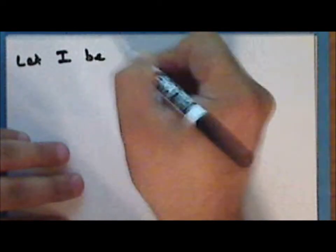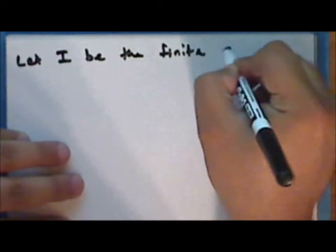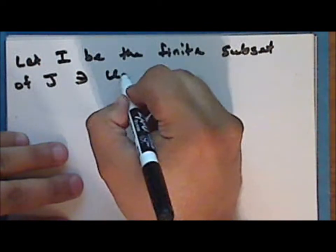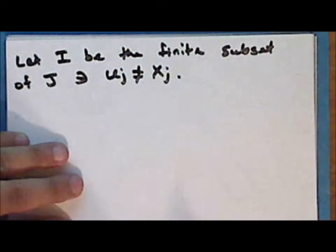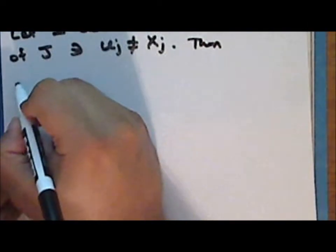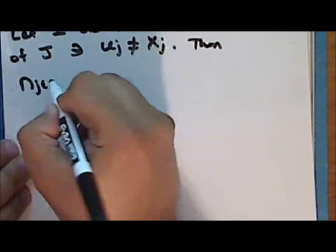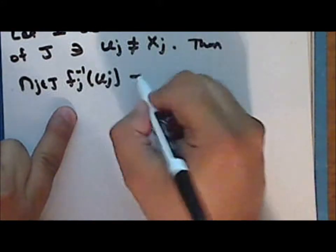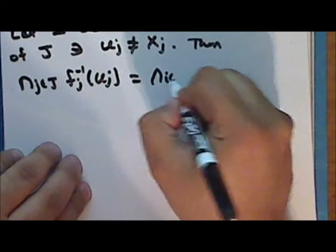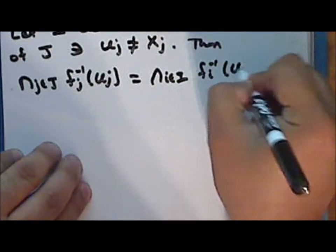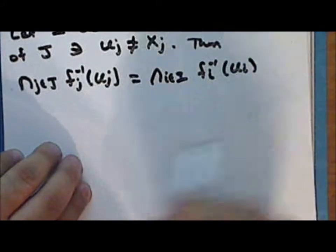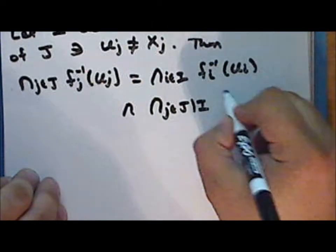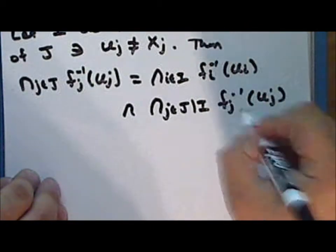Let I be the finite subset of the indexing set J for which u_j is not the entire factor space x_j. Then the intersection of the inverse images of the sets u_j under the j-th coordinate function is the intersection over indices i in I of the inverse images of u_i under the i-th coordinate function, intersected with the intersection over indices in the complement of I in J of the inverse images of u_j under the j-th coordinate function.